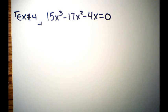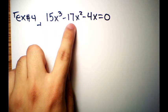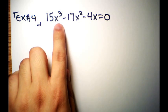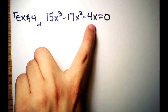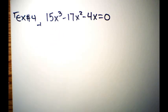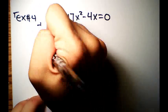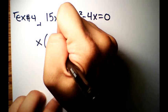Here's the last example: 15x³ - 17x² - 4x = 0. First, check for a GCF. The numbers 15, 17, and 4 share no common factor, but every term has at least one x, so we can factor out x, leaving x(15x² - 17x - 4) = 0.